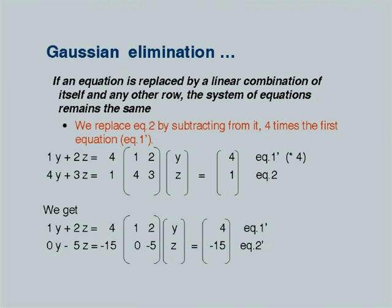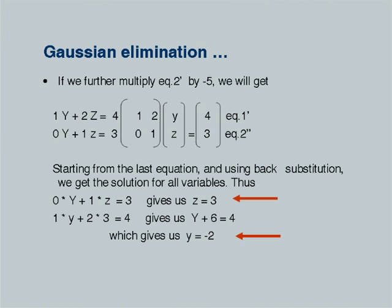We divide the second equation by its diagonal coefficient, giving 0y plus 1z equals 3. The coefficient matrix is reduced to a diagonal form: 1, 1 on the diagonal and 0 below. This completes the Gaussian elimination. For an n-by-n system we apply this technique to all subsequent rows at every stage.